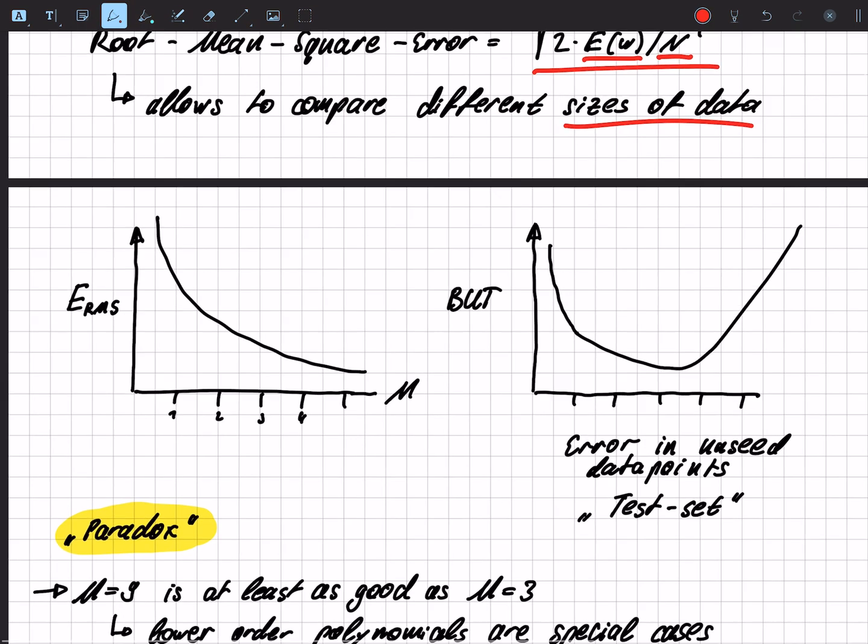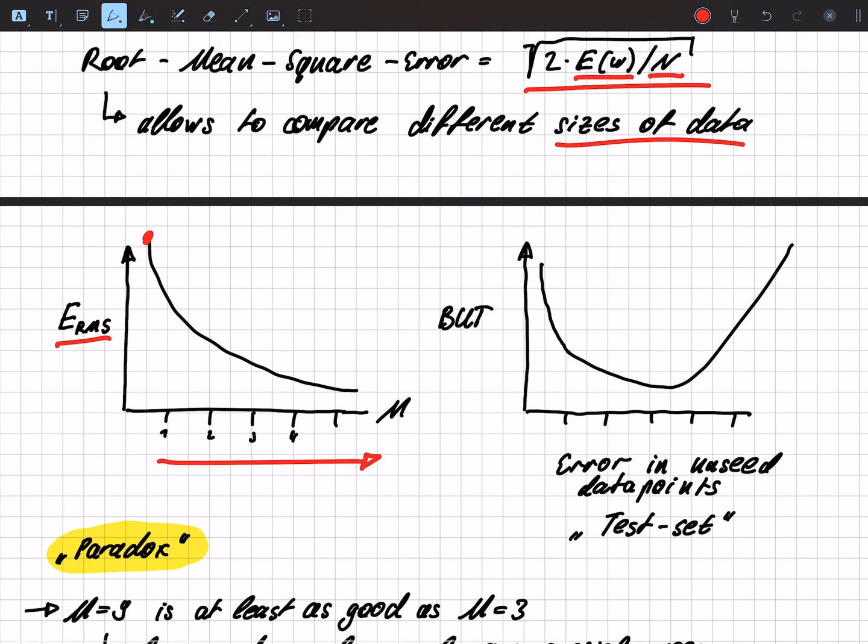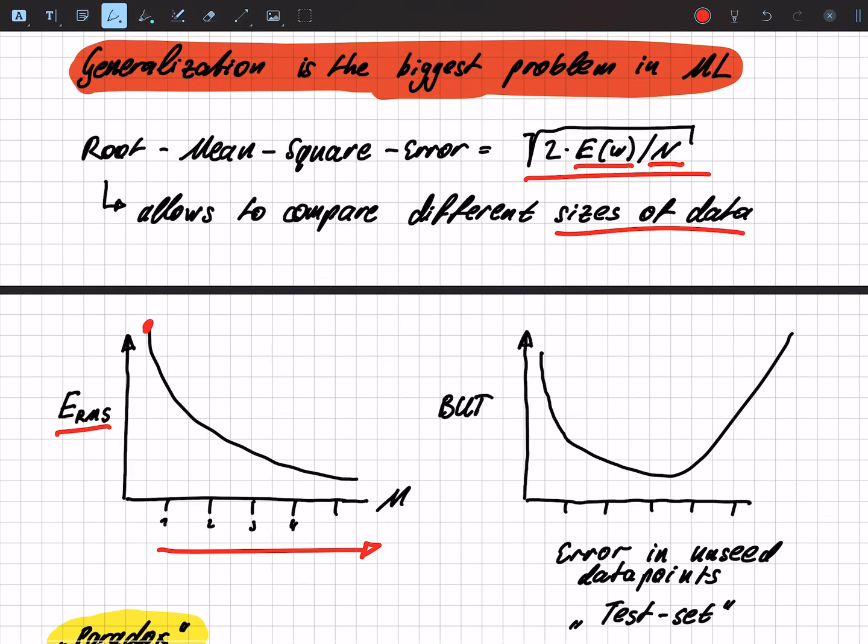Let's have a look at our root mean square error when the degree of the polynomial increases. We start out with a very large error, and when we increase the degree of the polynomial, we slowly go down, and eventually it will be at zero.